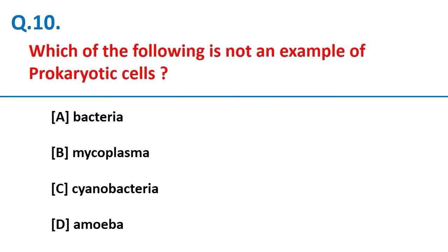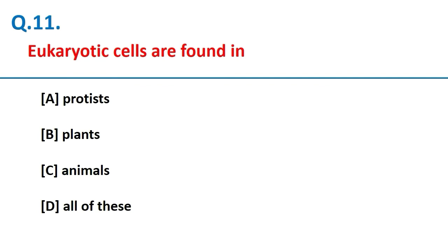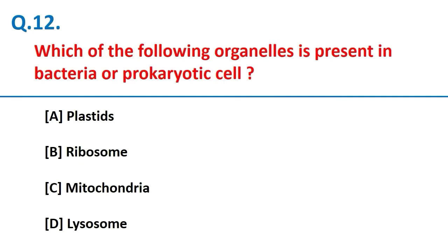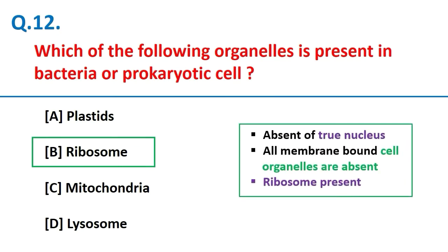Amoeba is not an example of a prokaryotic cell. Eukaryotic cells are found in protists, plants, and animals. The organelle present in bacteria (prokaryotic cells) is the ribosome. In prokaryotic cells, there is no true nucleus and all membrane-bound organelles are absent — only ribosomes are present. In eukaryotic cells, plastids, ribosomes, mitochondria, lysosomes, and all other cell organelles are found.